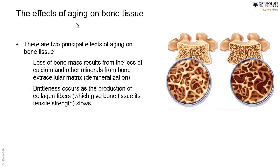Bone marrow is either red or yellow — not white. Yellow bone marrow is yellow because it contains fat, which is yellow.